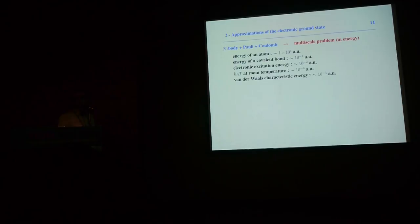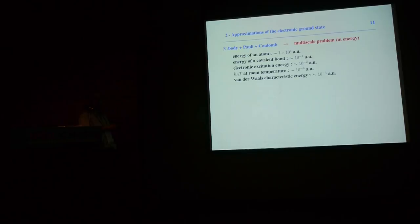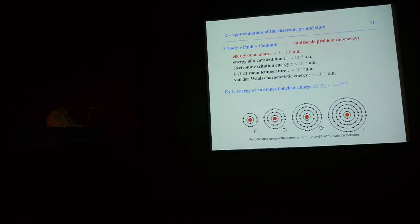One of the reasons why this problem is difficult is that it is multiscale in energy, even though there are no large or small parameters in the equation. The relevant energy scales range over at least eight orders of magnitude. The energy of an individual atom scales as Z^(7/3), where Z is the charge of the nucleus — from 1 for hydrogen up to 92 for uranium — so atomic energies range from about 0.5 to 10⁴ or more atomic units.